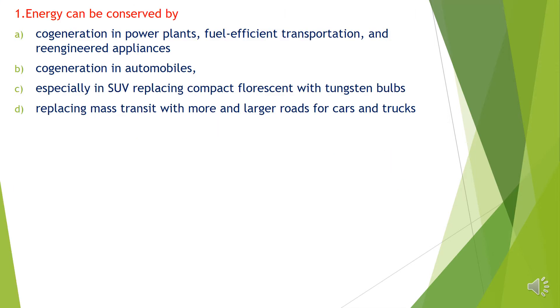Question 1. Energy can be conserved by: A. Co-generation in power plants, fuel-efficient transportation and re-engineered appliances, B. Co-generation in automobiles, C. Especially in SUV replacing compact fluorescent with tungsten bulbs, D. Replacing mass transit with more and larger roads for cars and trucks. Answer A. Co-generation in power plants, fuel-efficient transportation and re-engineered appliances.